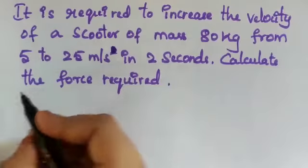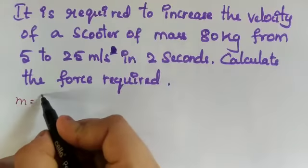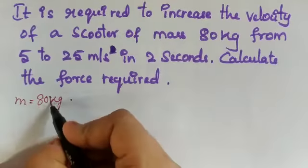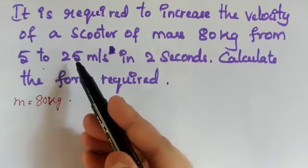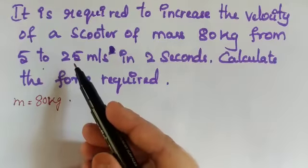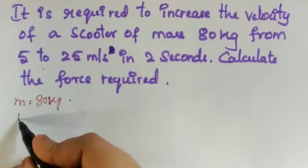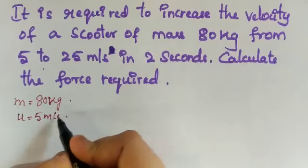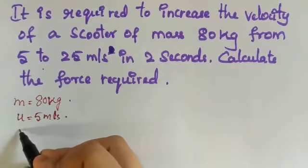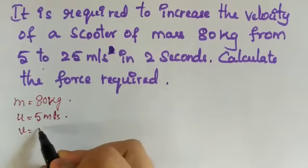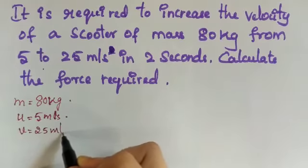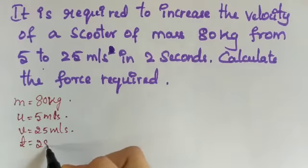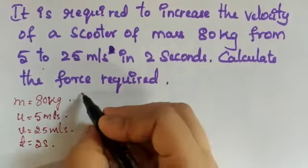Mass is given as 80 kg, so no need to convert it. From 5 to 25 meter per second means initial velocity U is 5 meter per second and final velocity V is 25 meter per second. Time is given as 2 seconds. We have to find out the force.